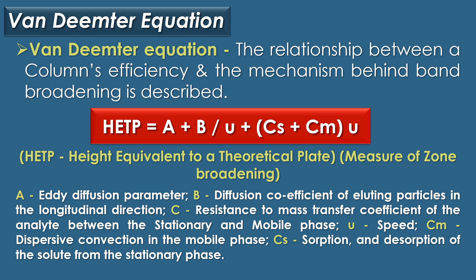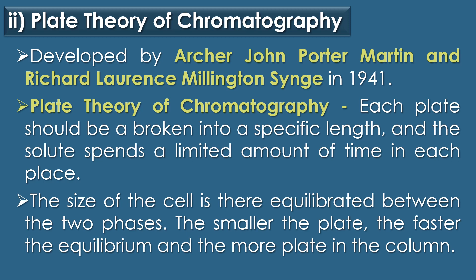The second theory is the plate theory of chromatography. It was first developed by Archer John Porter Martin and Richard Lawrence Millington Synge in the year 1941. The plate theory states that each plate should be broken into a specific length and the solute spends a limited amount of time in each plate. The size of the cell is equilibrated between the two phases — the smaller the plate, the faster the equilibrium, and the more plates in the column.